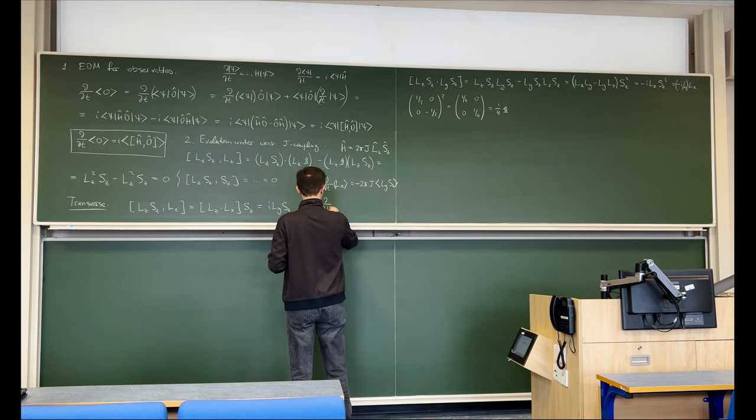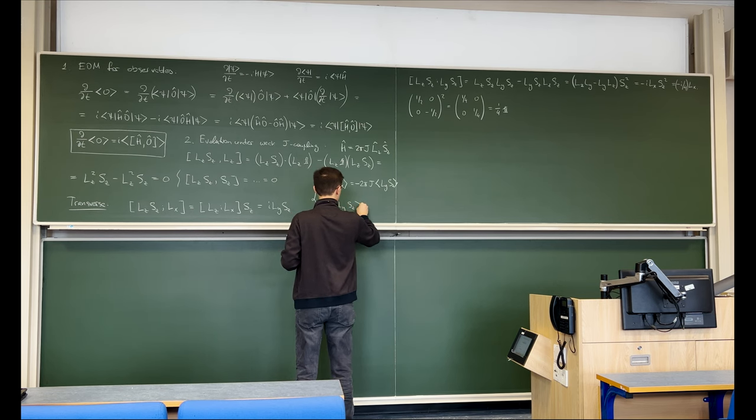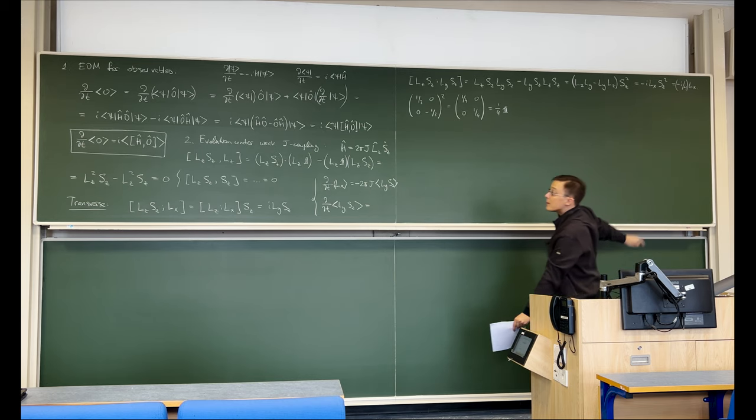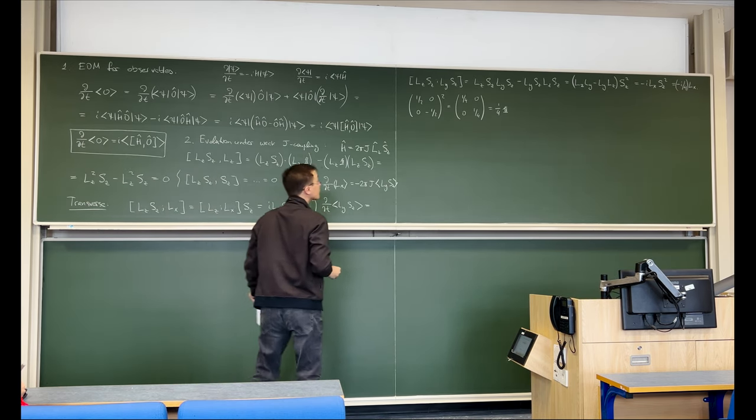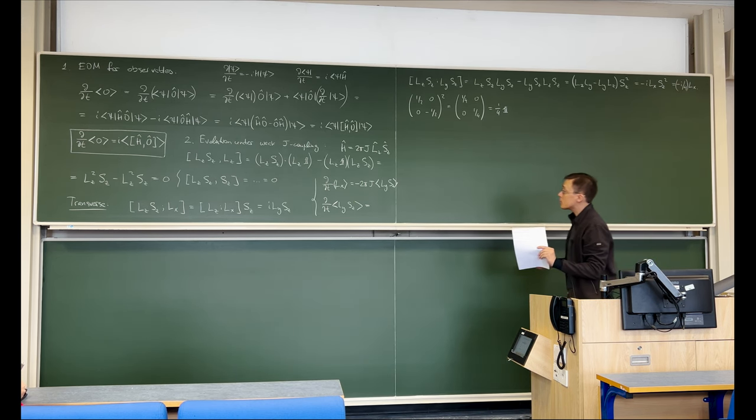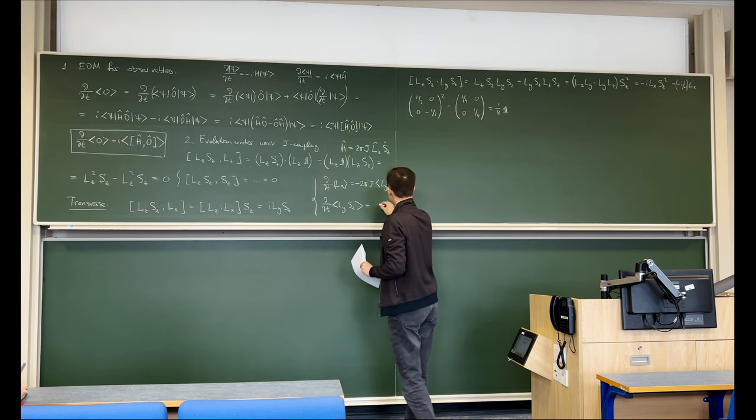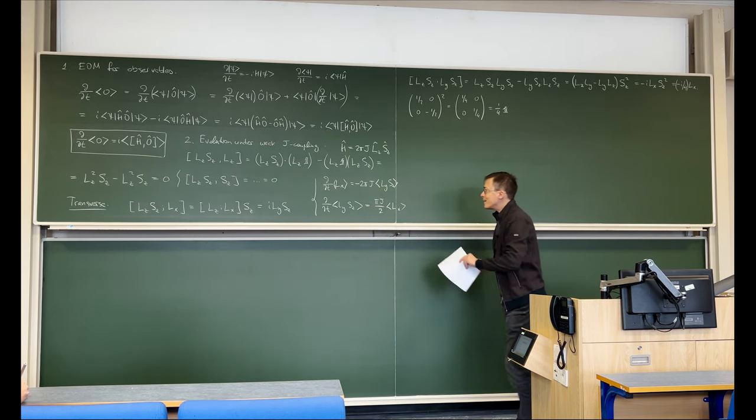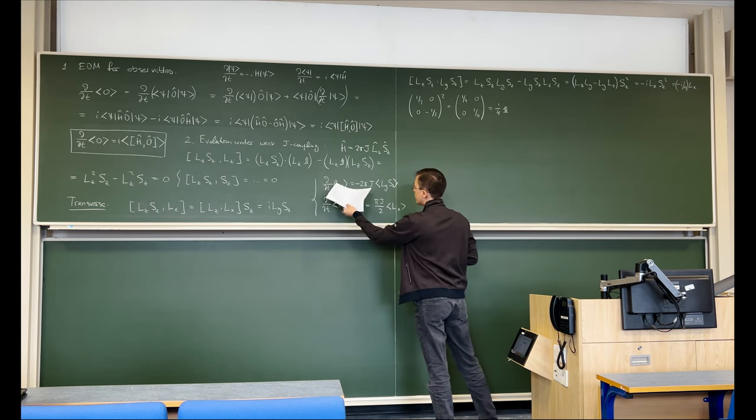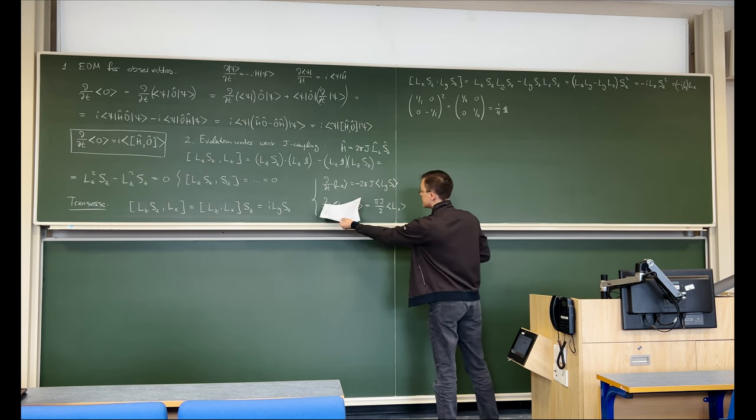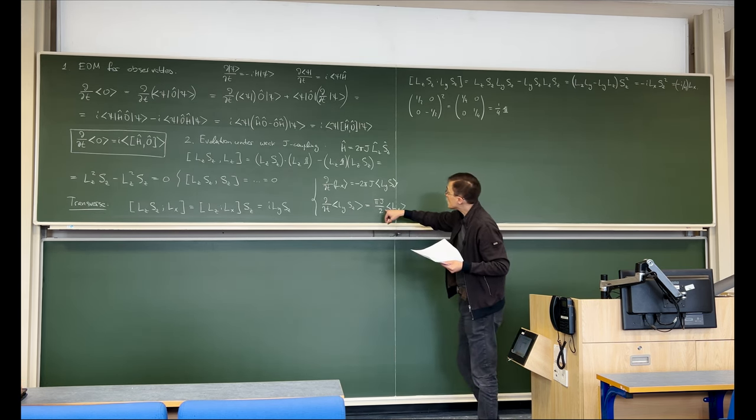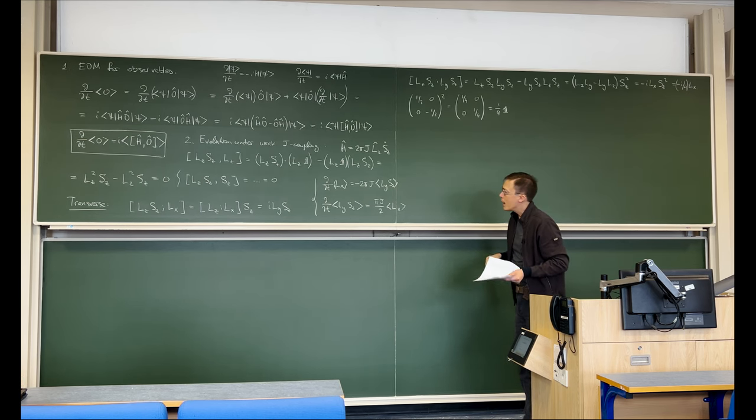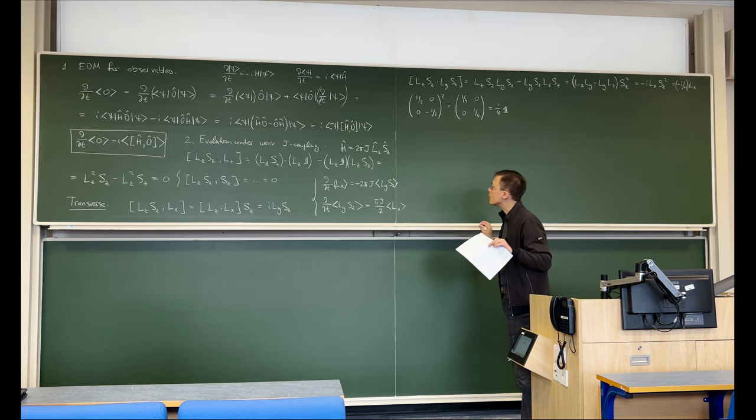So what we have here, therefore, is d by dt LySz is plus πj over two times Lx. And you can kind of see the emerging rotational dynamics, right? The derivative of a cos is minus sine, the derivative of a sine is plus cos, but the frequencies are different. That's a bit of a problem. And so if you draw this, this is actually an ellipse. And we need to do a little bit of mathematical massaging here to turn it into a circle.